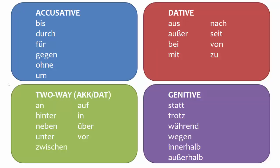In other words, nouns and pronouns that follow prepositions such as bis or durch will be in the accusative case. Nouns and pronouns that follow words like aus and außer will be in the dative case. And nouns and pronouns that follow words like statt and trotz will be in the genitive case.